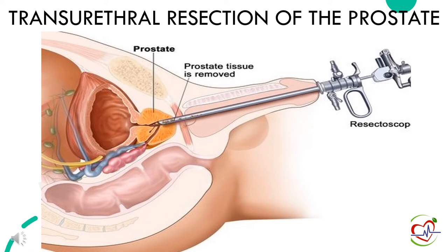The next surgical procedure is called transurethral resection of the prostate, or TURP. This is carried out using a device called a resectoscope, which is a thin metal tube containing a light, camera, and a loop of wire. It is passed along the urethra until it reaches the prostate, and the surgeon removes the section of the prostate that is causing the symptoms. This procedure relieves symptoms quickly, and after TURP a temporary catheter is used to drain the bladder.